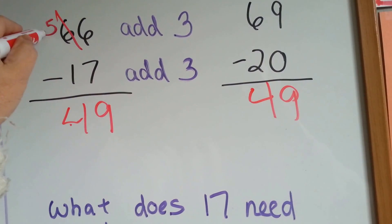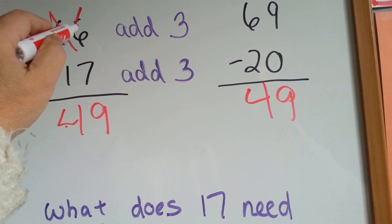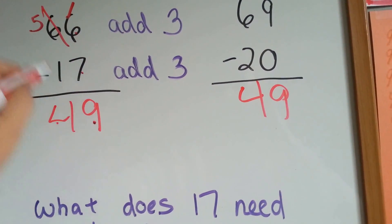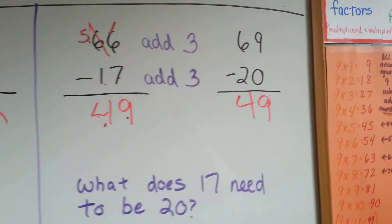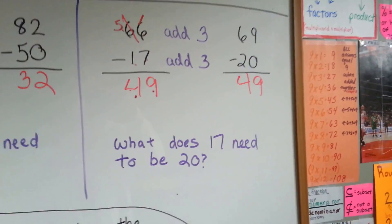We would have had to borrow. That would have been a 5. That would have been 16. 16 minus 7 is 9. 5 minus 1 is 4. This way is easier. And you can do it a little quicker in your head if you have to.